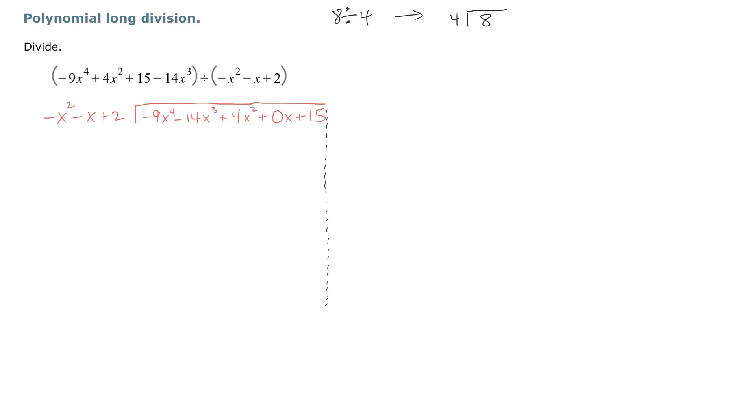Now we start off with a question about how many quantities of negative x squared minus x plus 2 go into negative 9x to the fourth, and the answer is 9x squared. And I'm going to put the 9x squared over the 4x squared.